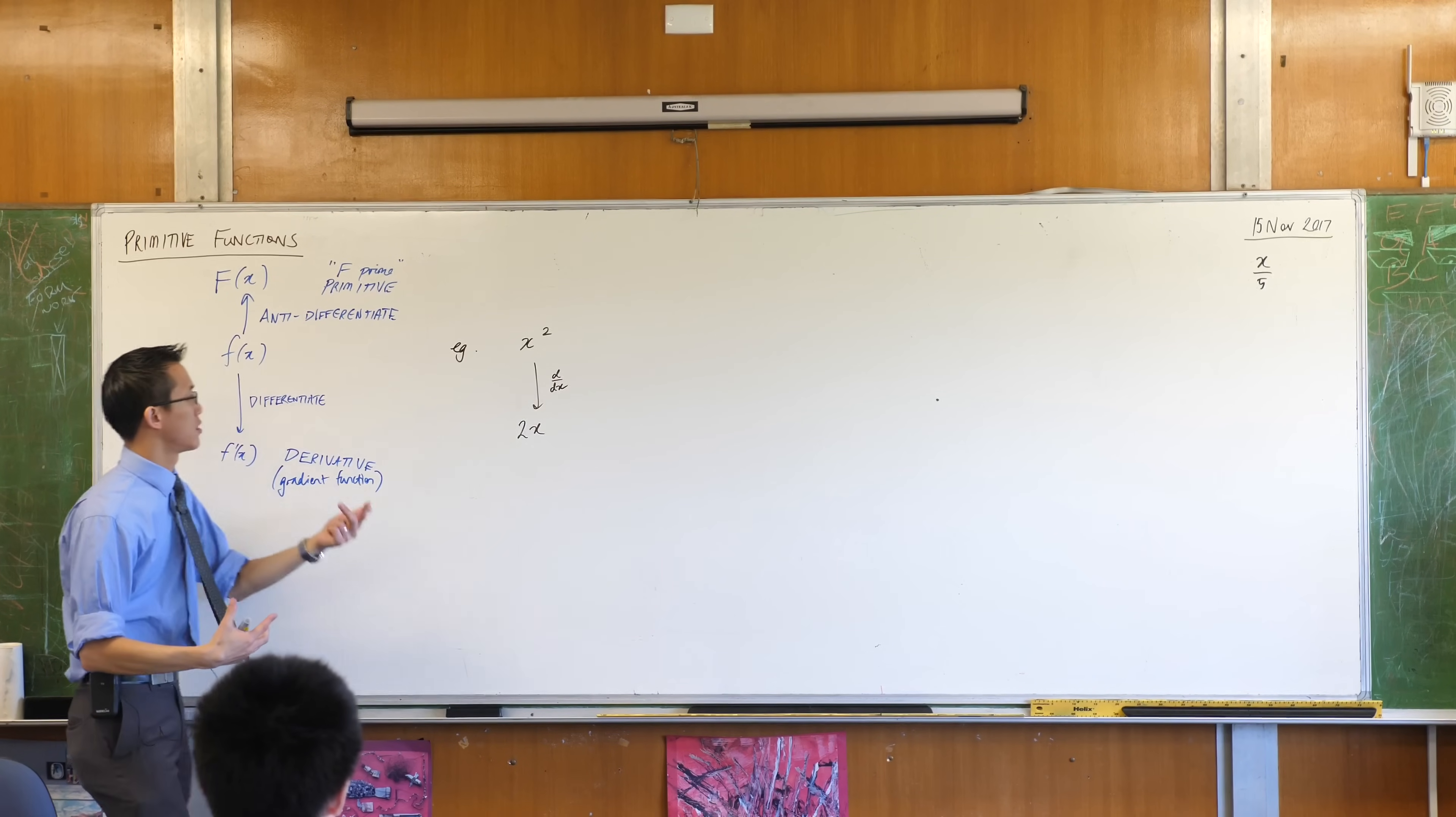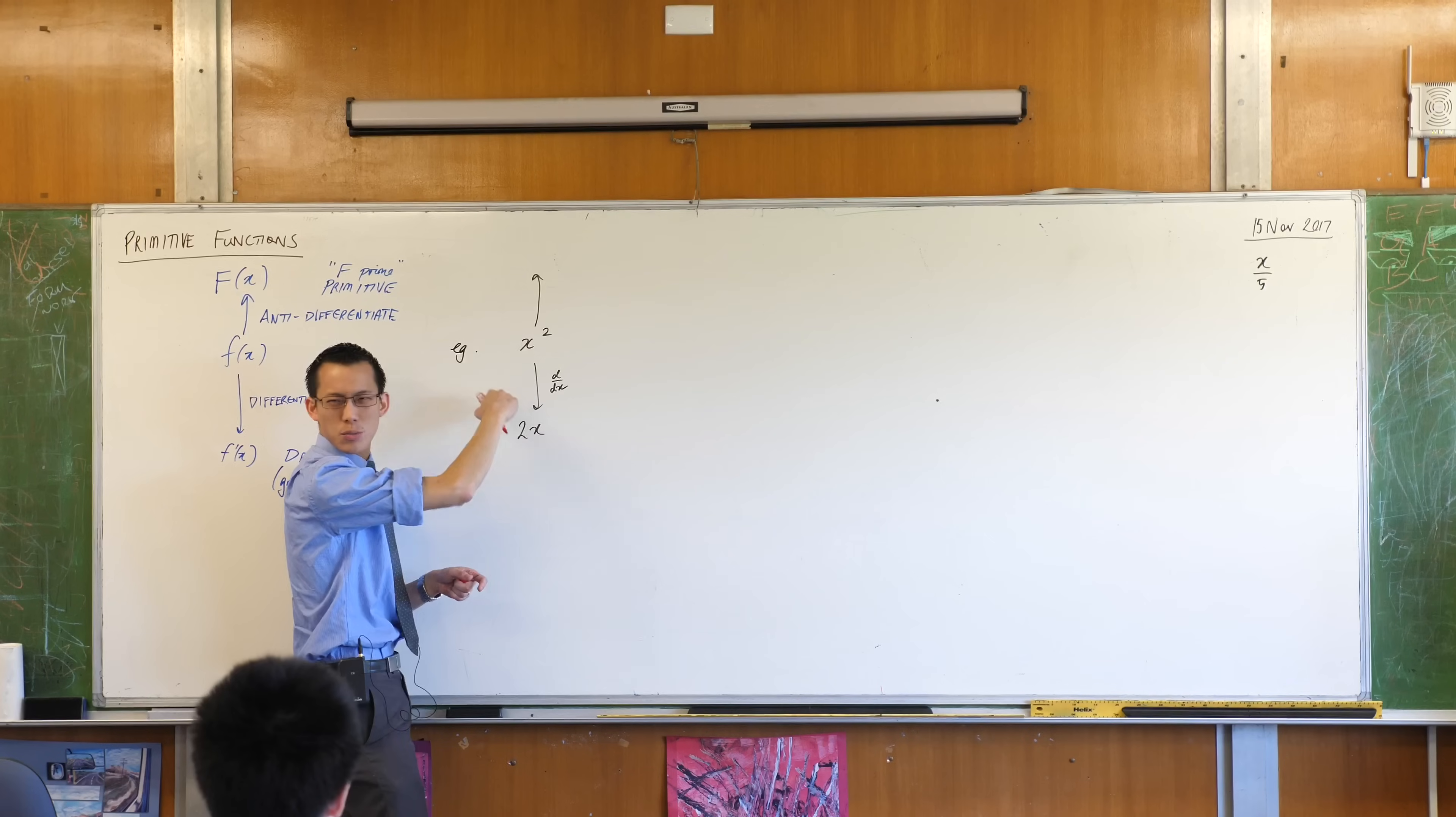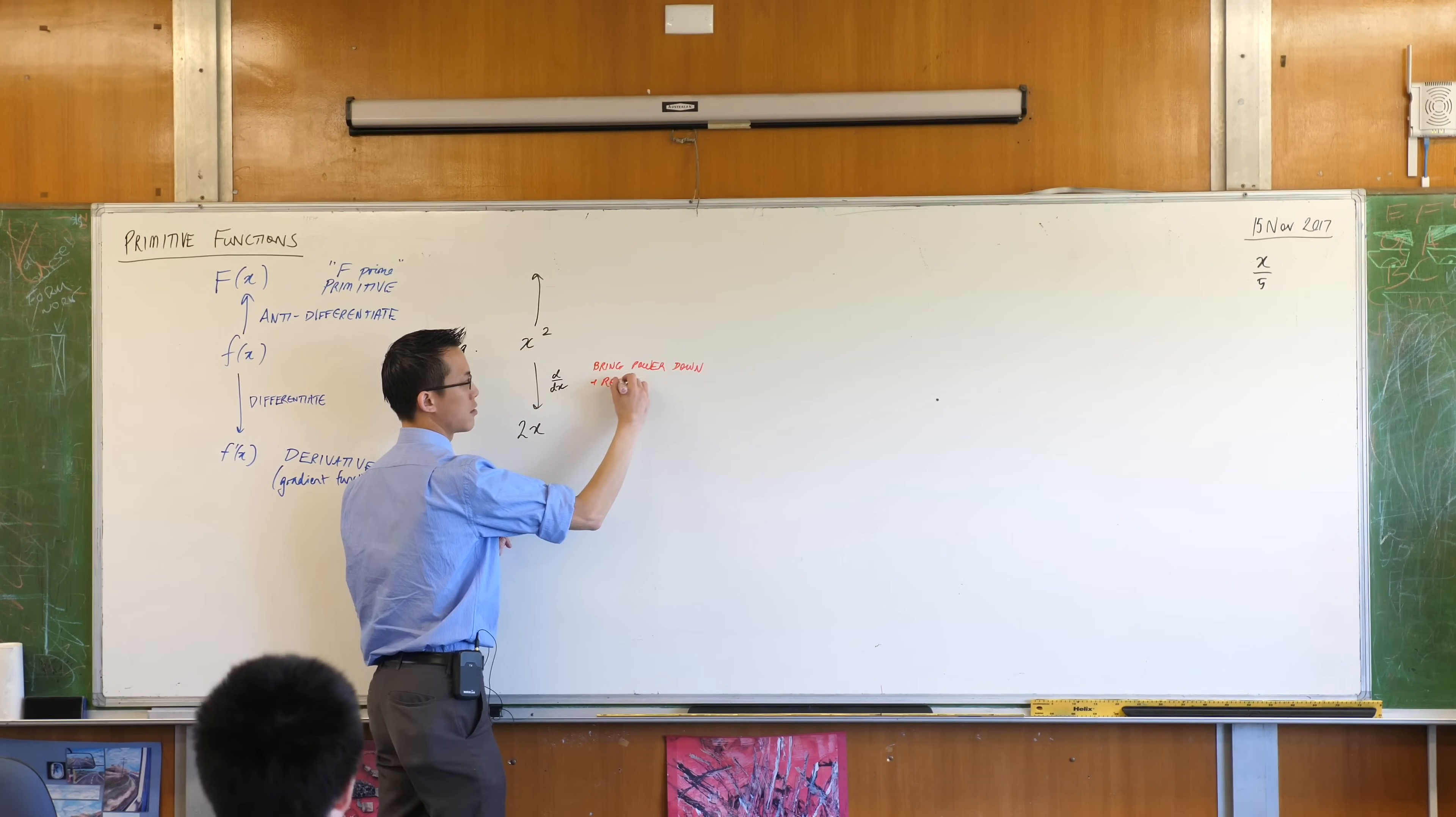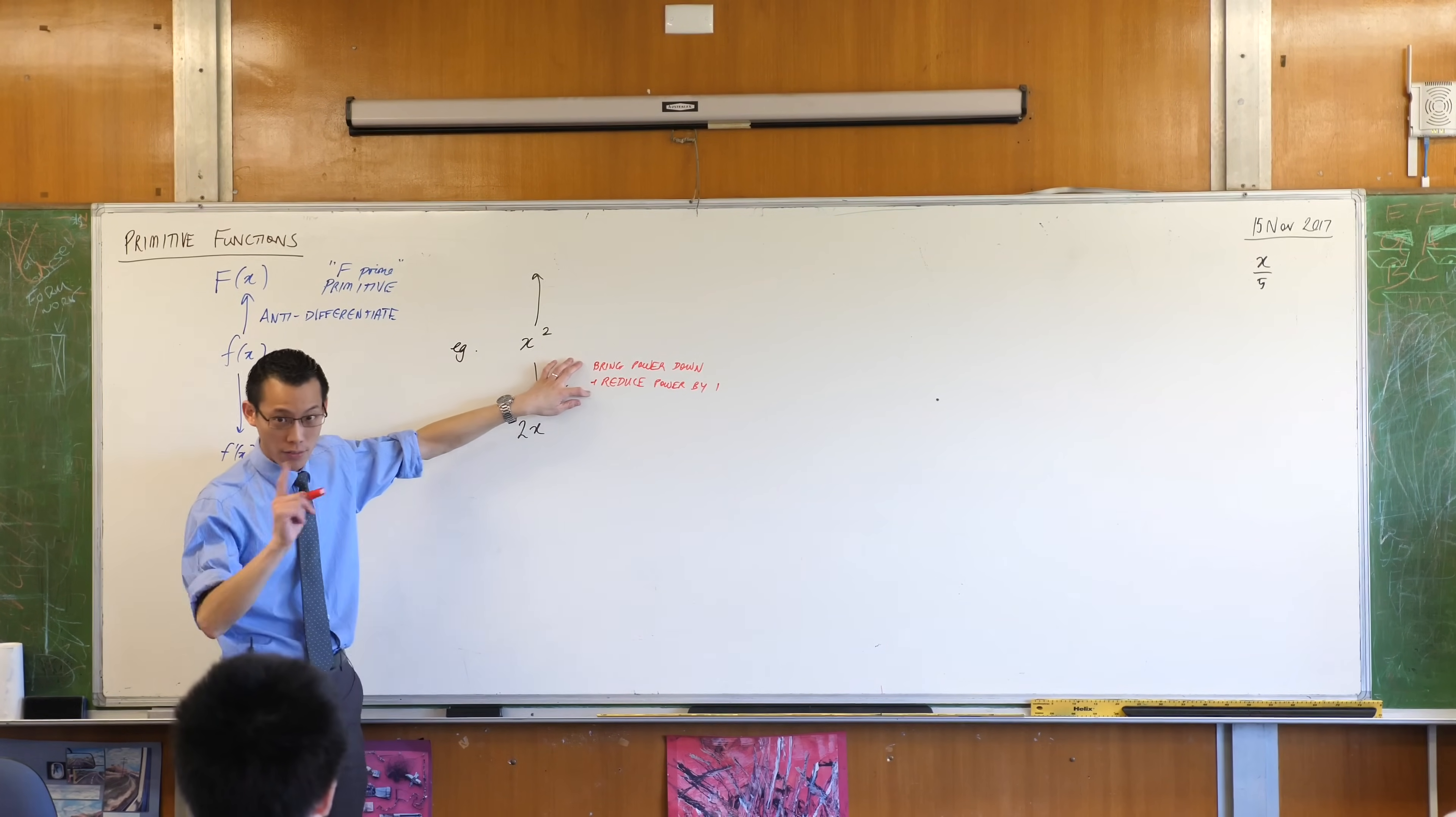What you're doing is you bring the power down and you reduce the power by one. Being that we're trying to undo this, we're trying to anti-differentiate, if I think about where did this come from, what was it that got differentiated to become x squared, I have to do the reverse of that. Please note, let's actually write this down. The rule that makes this work in our head is bring power down, make it the coefficient, and then reduce the power by one.